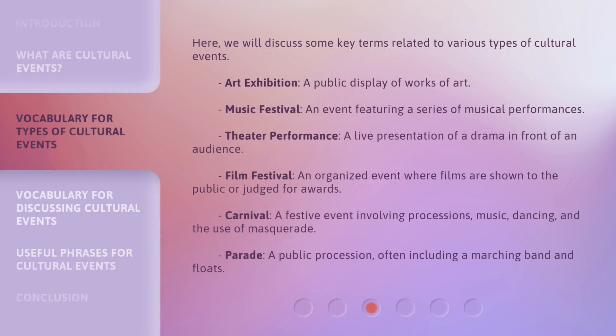Here, we will discuss some key terms related to various types of cultural events. Art exhibition: a public display of works of art. Music festival: an event featuring a series of musical performances. Theater performance: a live presentation of a drama in front of an audience. Film festival: an organized event where films are shown to the public or judged for awards. Carnival: a festive event involving processions, music, dancing, and the use of masquerade. Parade: a public procession, often including a marching band and floats.